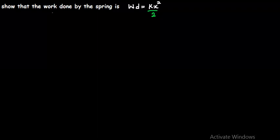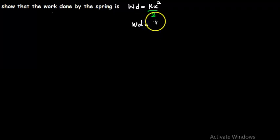Here is another physics problem. Let's assume we are given this kind of problem that asks you to show that the work done by the spring is actually kx to the power of 2 divided by 2, which is the same thing as writing the work done is going to be a half kx squared.